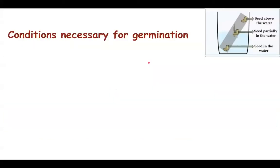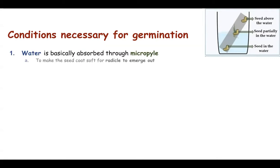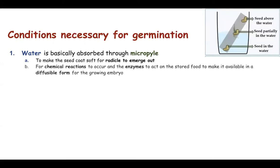What are the conditions needed for germination? The first condition is water. This water will be absorbed through the micropyle. Once water has entered inside the seed, it will make the seed coat soft. The radicle and plumule of the embryo will be able to emerge and reach into the soil for absorption of water and minerals. Chemical reactions will start occurring inside the stored food — whether in the endosperm or the cotyledon — making the food diffusible so the growing embryo can use it for nutrition.